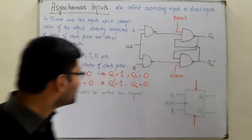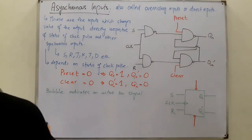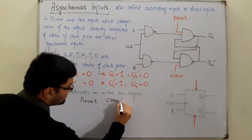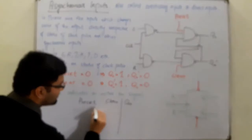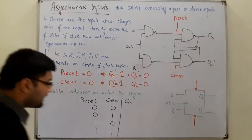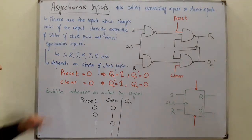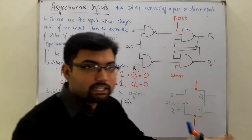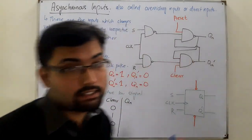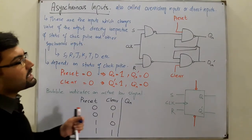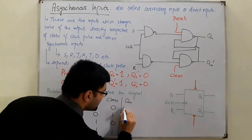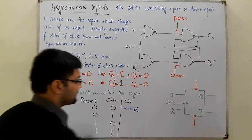Now let's talk about the truth table. We have two inputs: preset and clear, and the output is Q_n. There are four combinations. When both preset and clear are zero, preset being zero makes Q_n one while clear being zero makes Q_n zero — they implement different outputs at the same time. This is an invalid state; it cannot be used because we cannot have both zero and one for Q_n simultaneously.